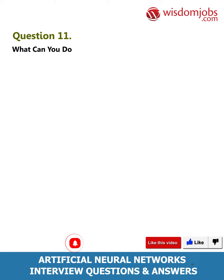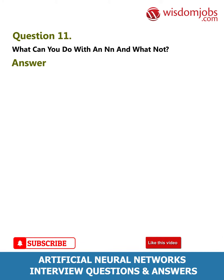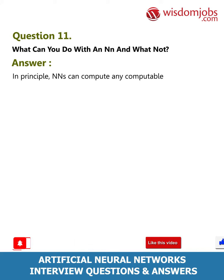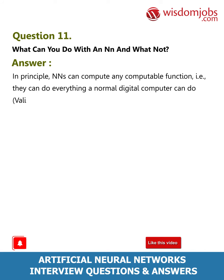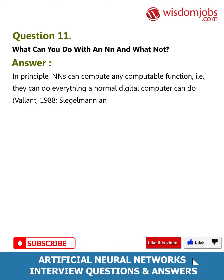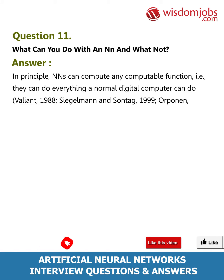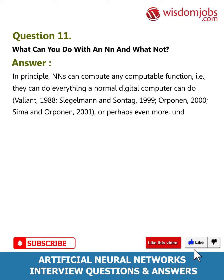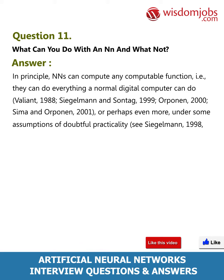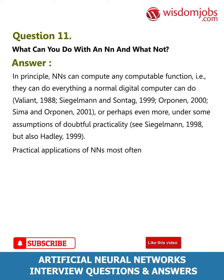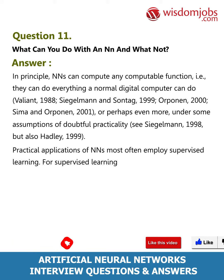Question 11: What can you do with a neural network and what not? In principle, NNs can compute any computable function — they can do everything a normal digital computer can do (Valiant 1988; Siegelmann and Sontag 1999; and others), or perhaps even more under some assumptions. Practical applications of NNs most often employ supervised learning, for which you must provide training data that includes both the input and the desired result (the target value).